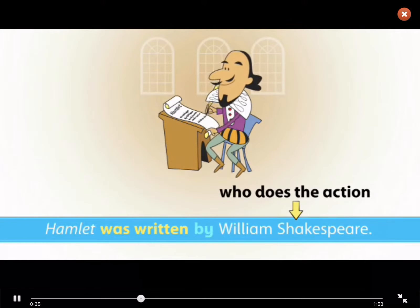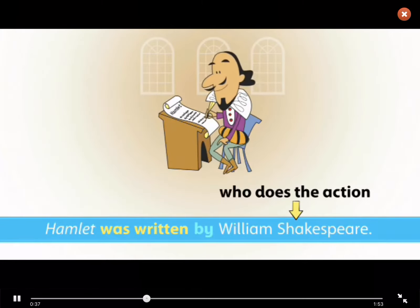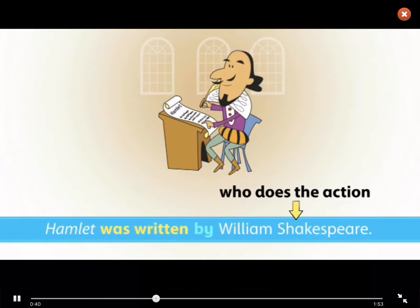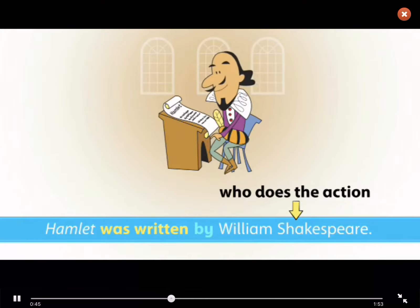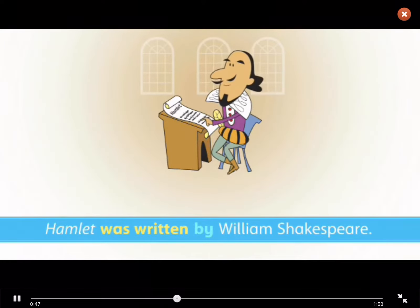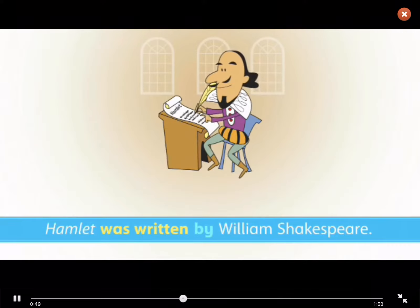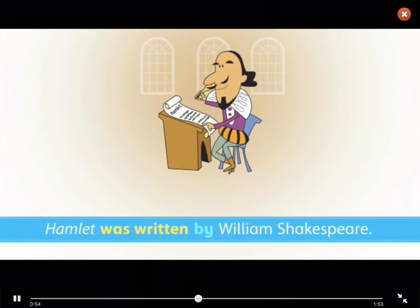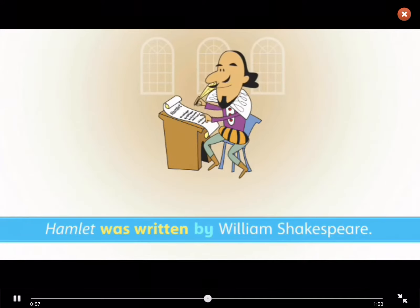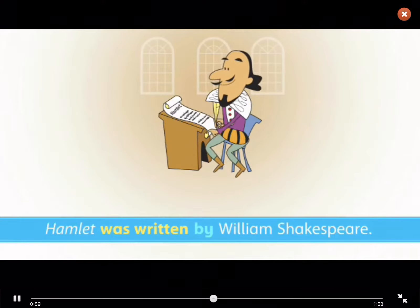Most English sentences are active. In active sentences, we are more interested in the person or thing which is doing the action. We use the passive when we are more interested in the action than in the person or thing doing it, or when we don't know who or what does the action.